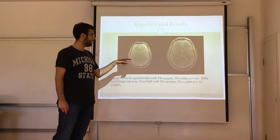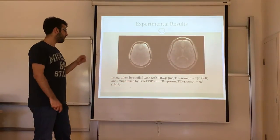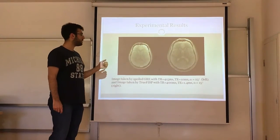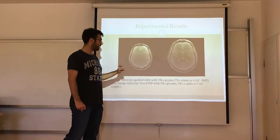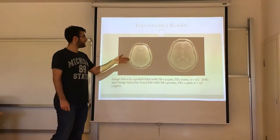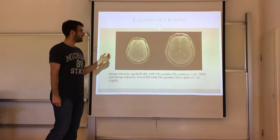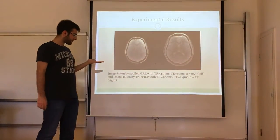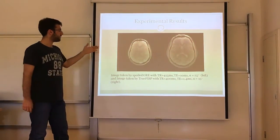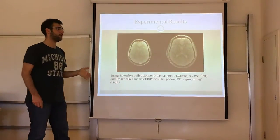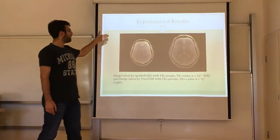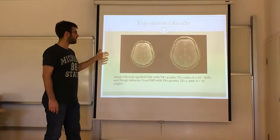The right image has TR 400 ms, TE 1.4 ms, and flip angle 15 degrees. What I want to show is that when we keep TR very long, we get a result similar to the spoiled gradient echo sequence. This is because with a very long TR, the FID signal dies out due to T2 effects before the next RF pulse arrives, and therefore we obtain a result very similar to the spoiled gradient echo sequence.